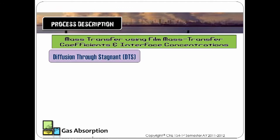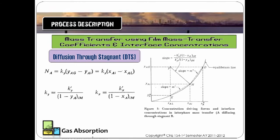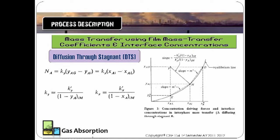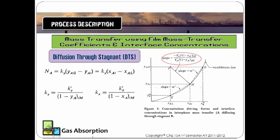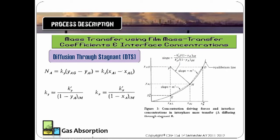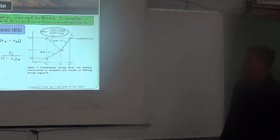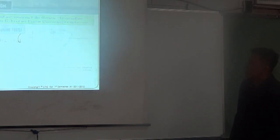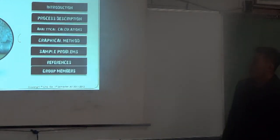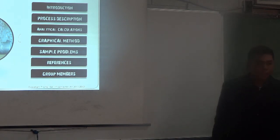For the diffusion to a stagnant phase, these are some of the relationships and equations and almost the same plot, but it will have a different slope. That will be the equation of the slope compared to the equimolar counter-diffusion.